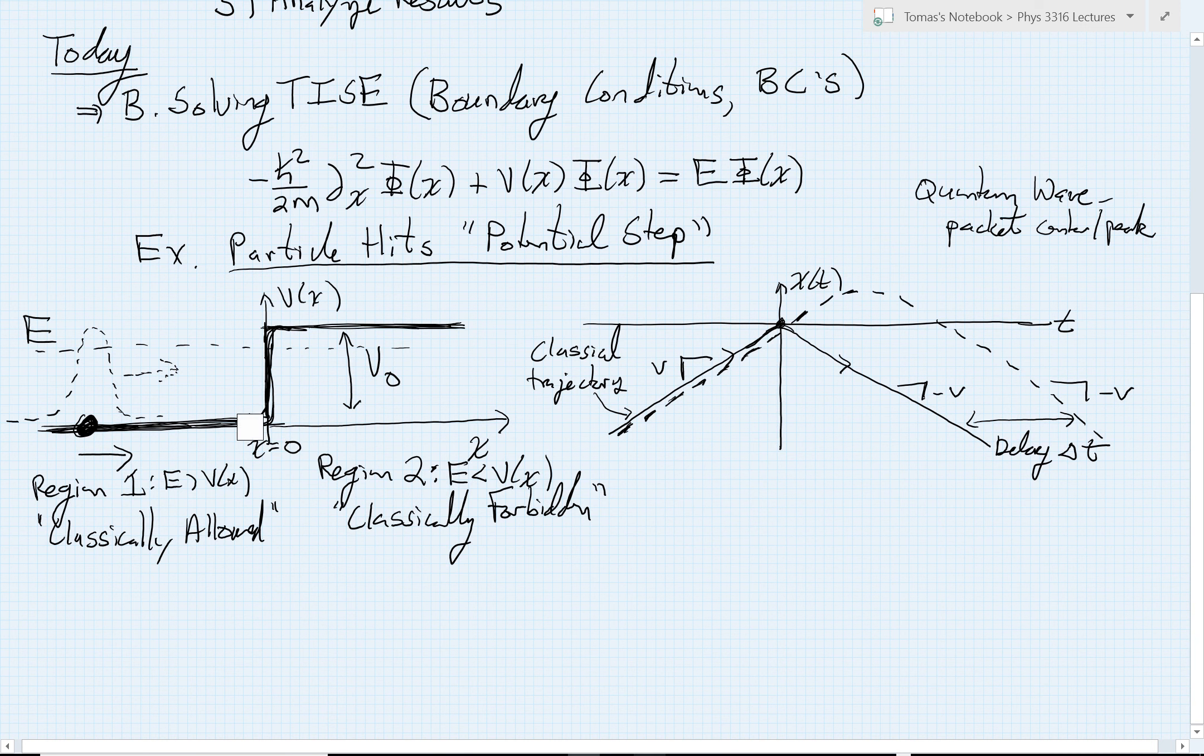In region 1, when X is less than 0, the particle will be coming in. Here's the classical view of the incoming particle with a certain energy, indicated with this dashed line. In region 1, it's got more energy than the potential energy because it has some positive kinetic energy traveling towards this step.